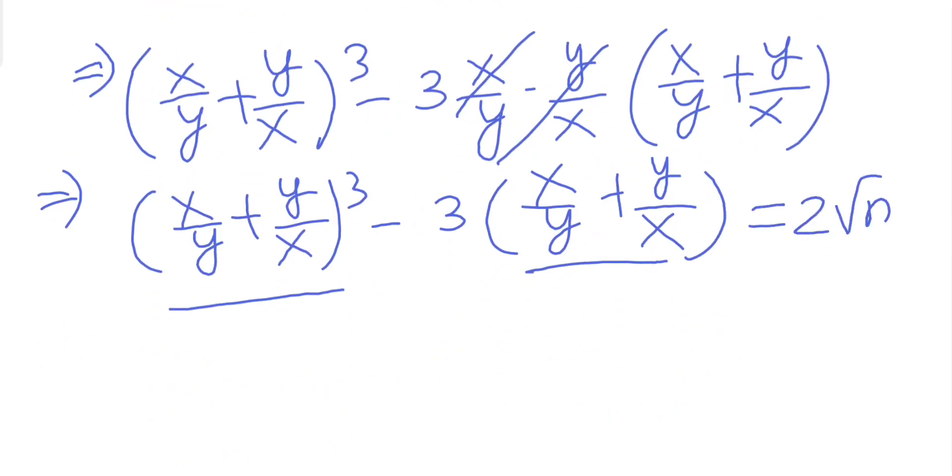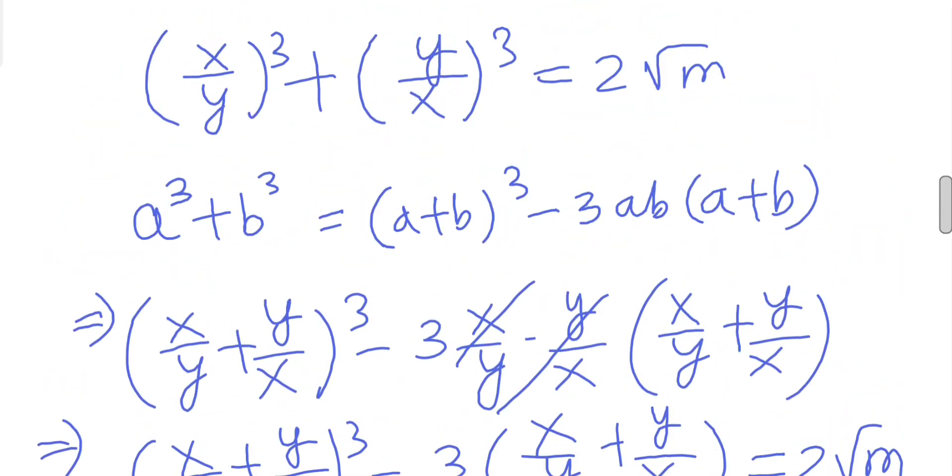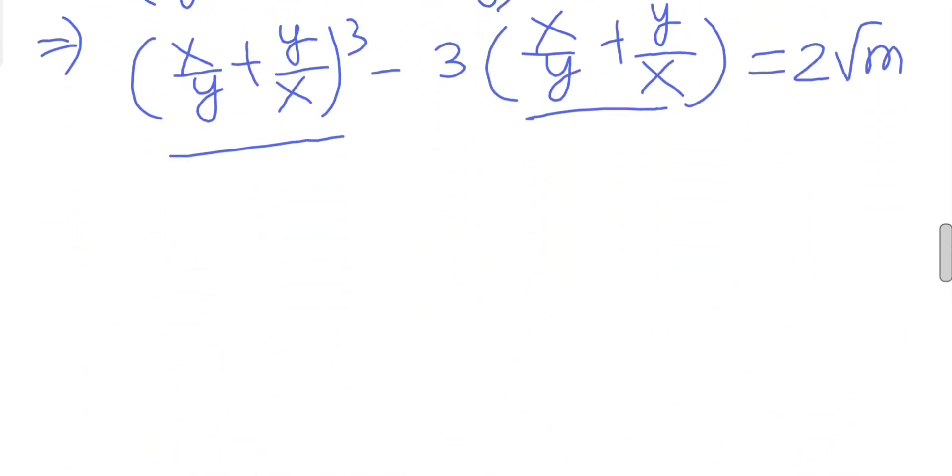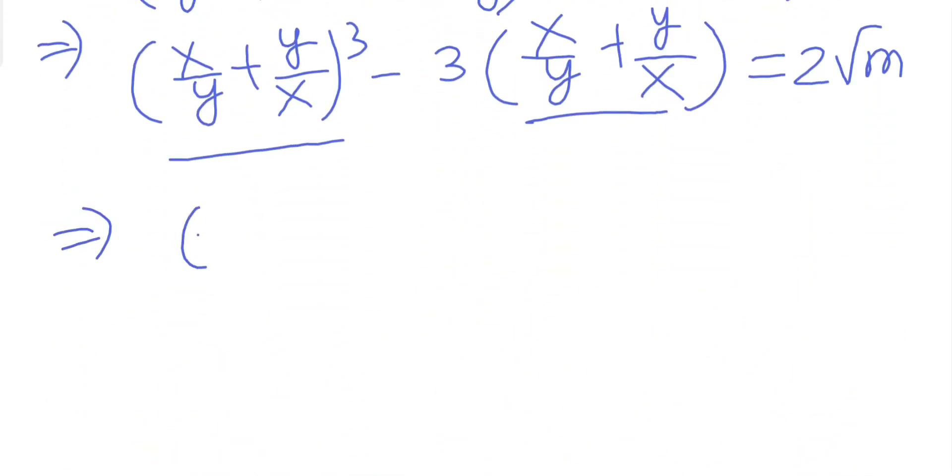This equals 2√m. So let's use it: (-1)³ - 3(-1) equals 2√m. This gives me -1 + 3 equals 2√m, and after simplifying we'll get 2√m equals 2.